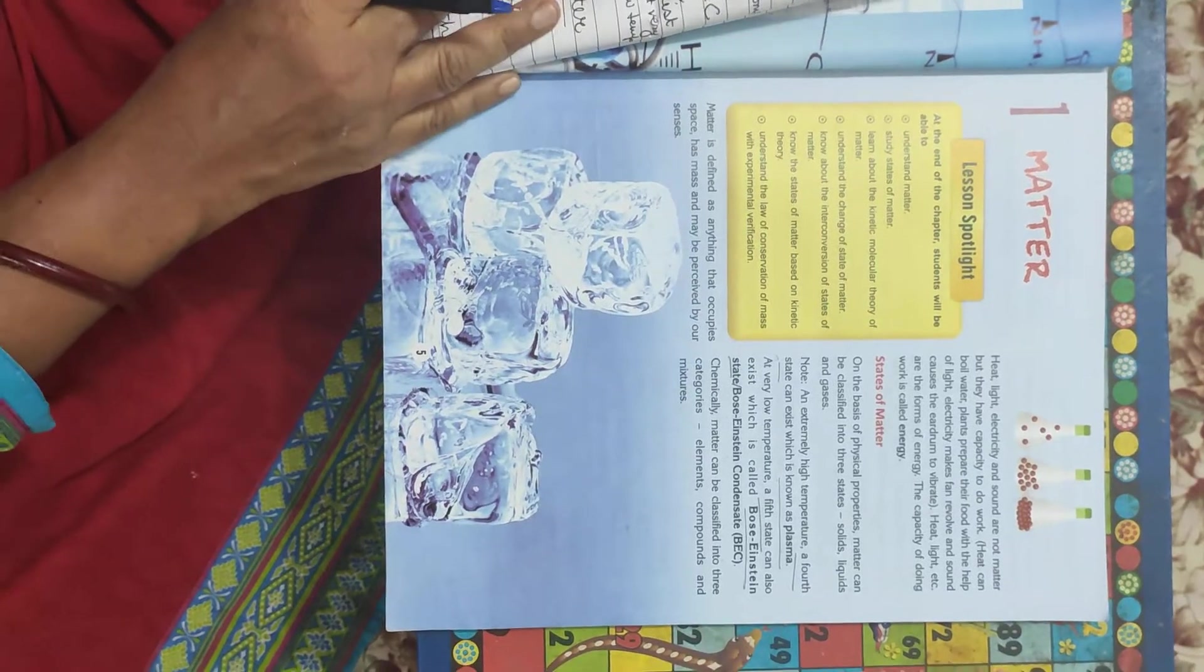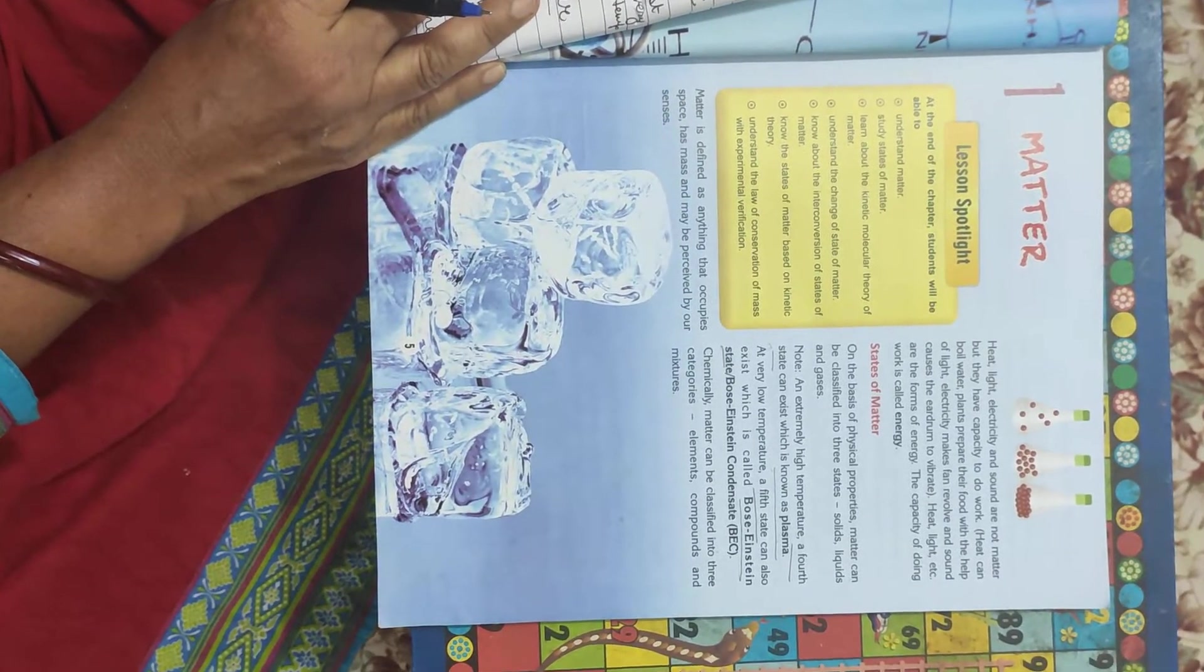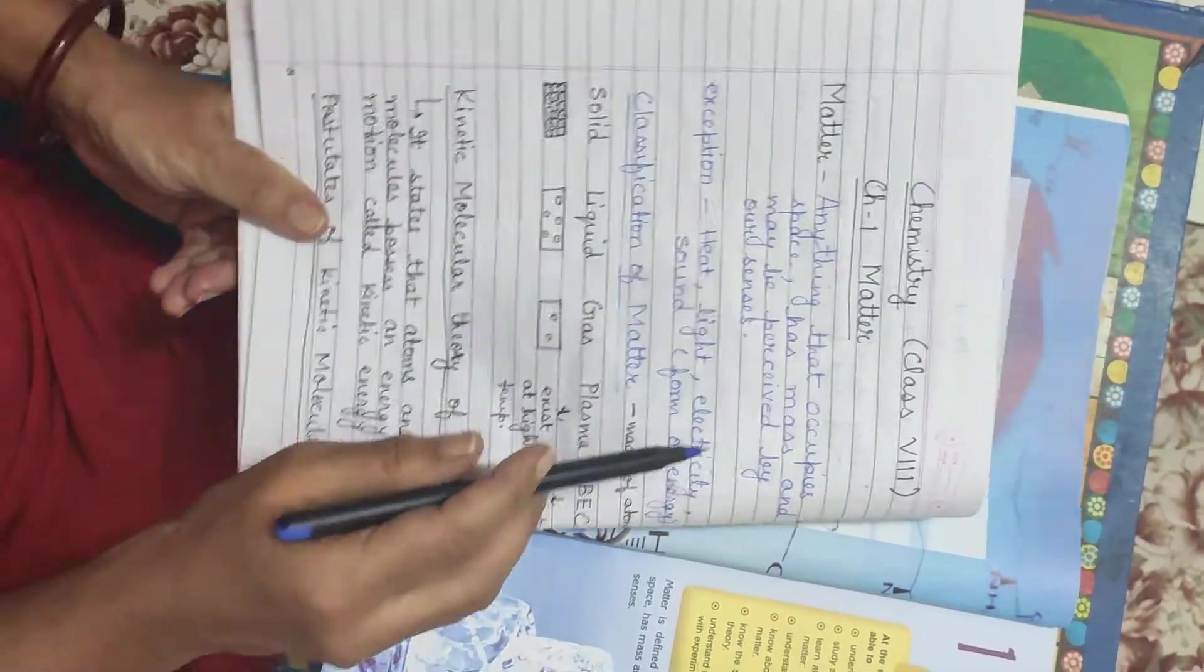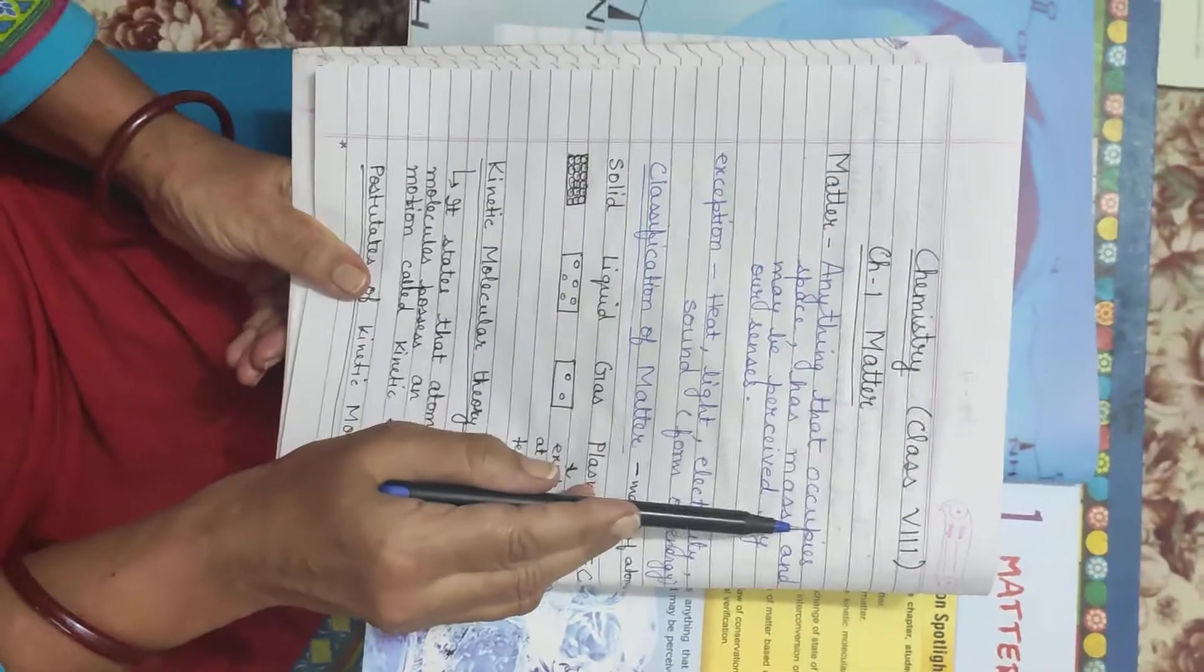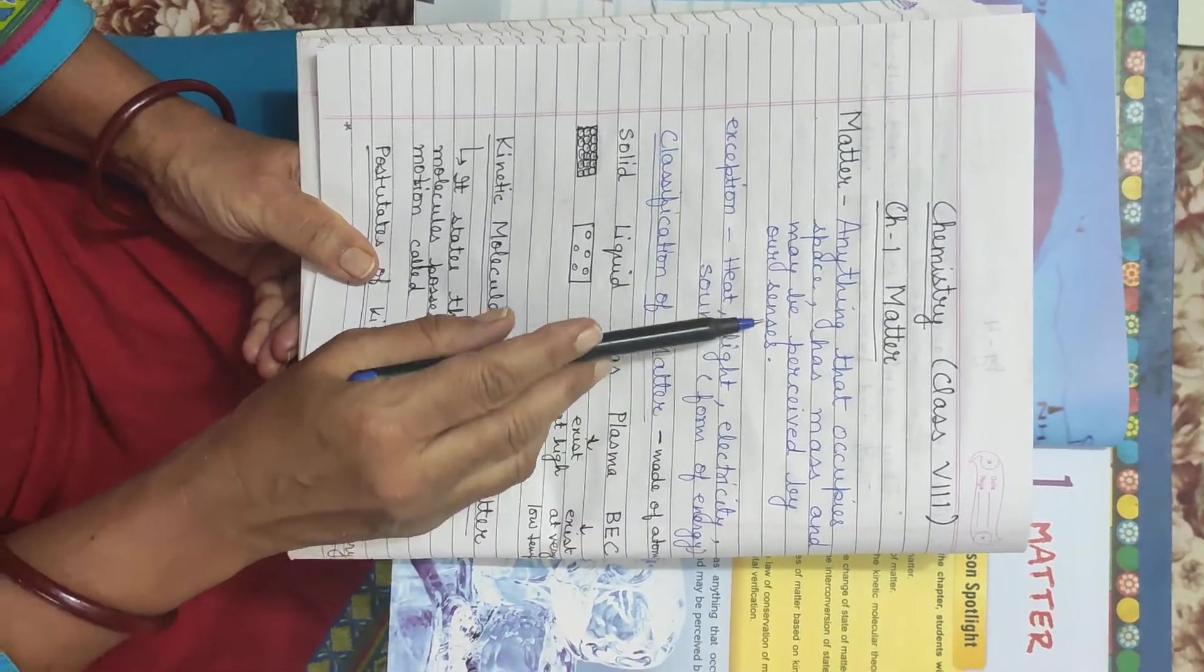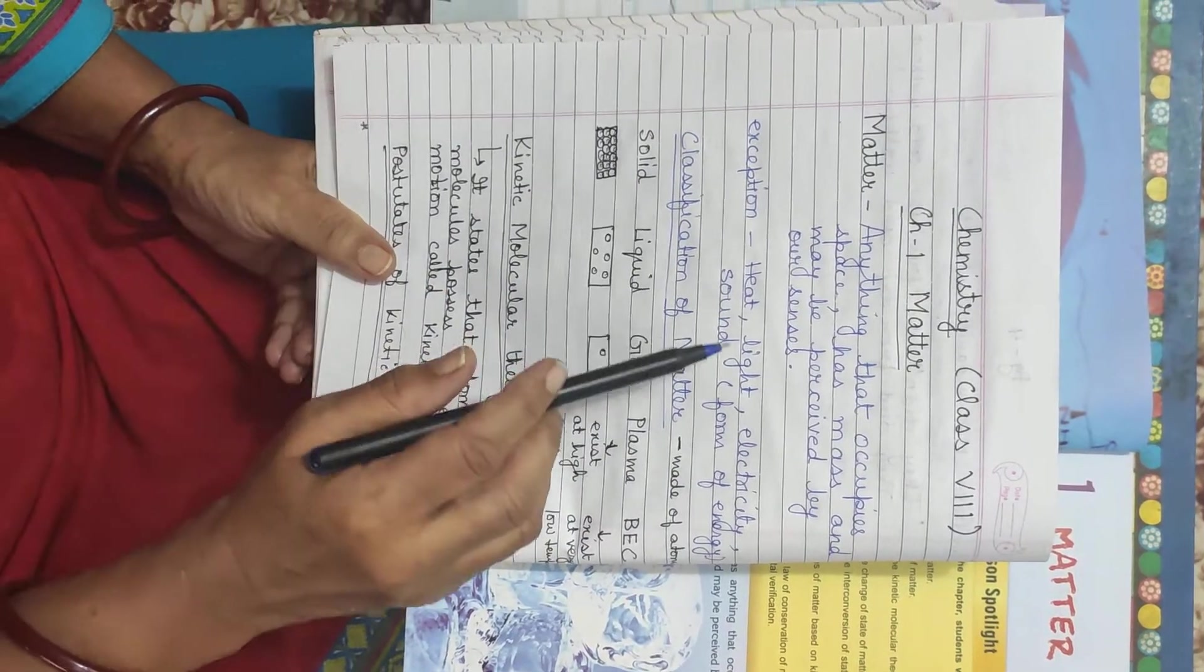First question arises, what is Matter? Matter, anything that occupies space and has mass and may be perceived by our senses, is called Matter.